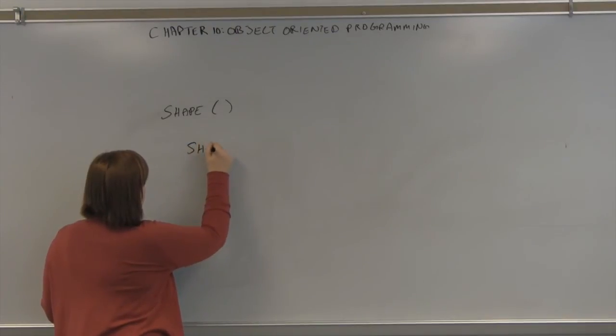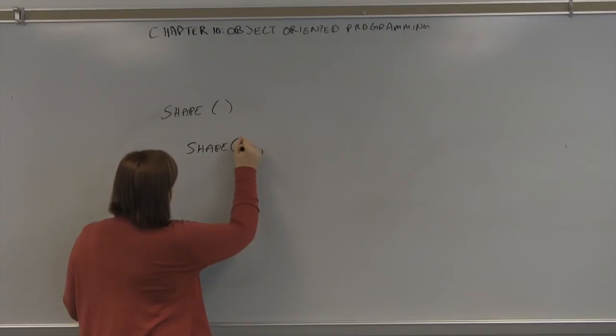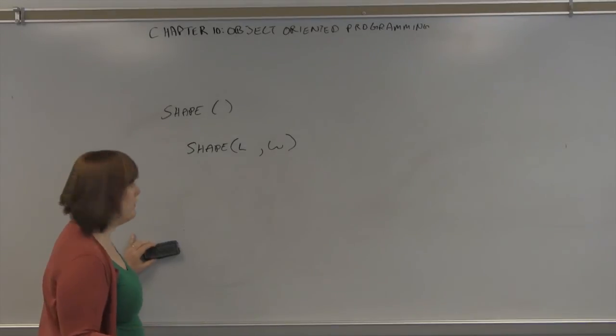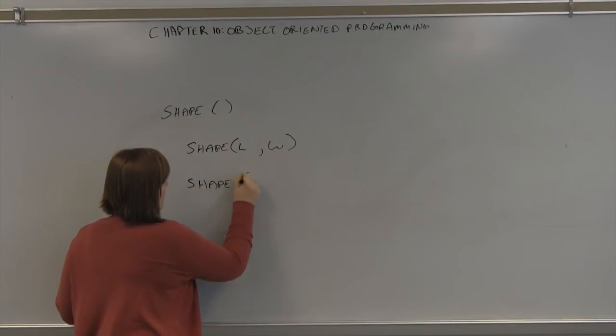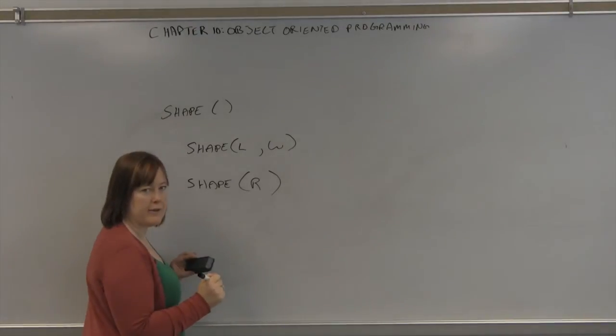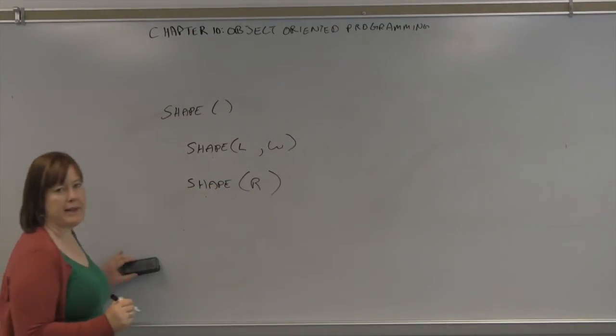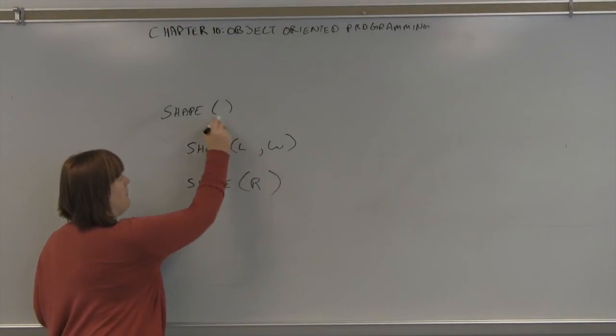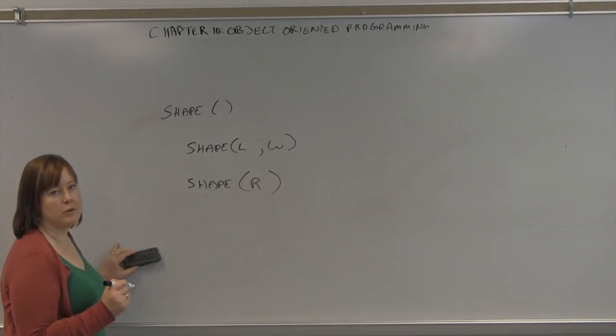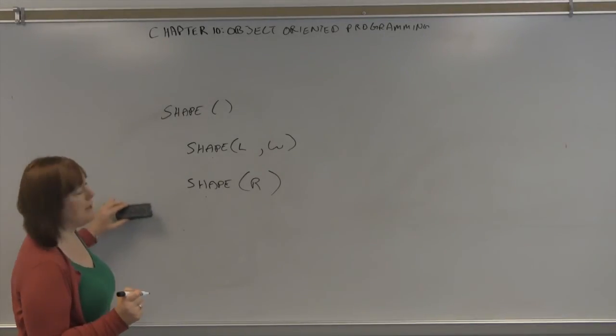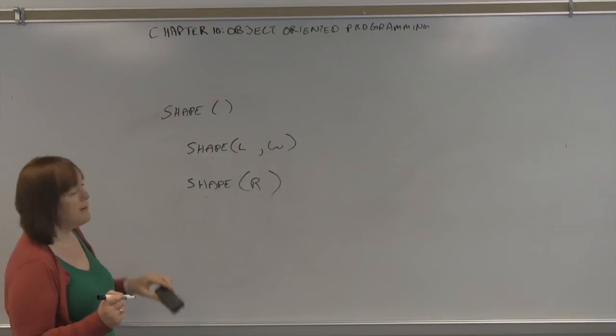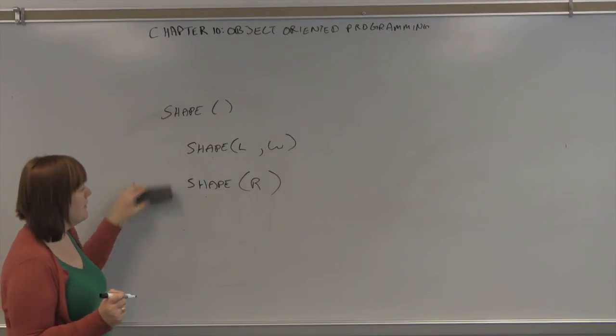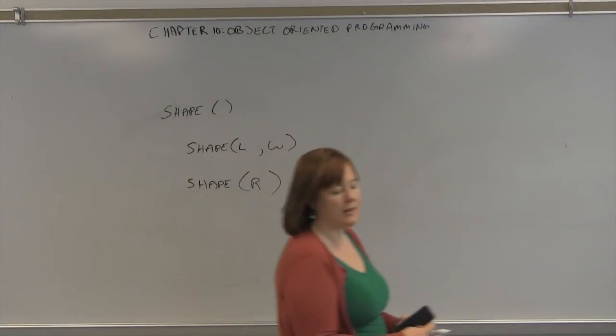But if we pass parameters into it, length and width, we could calculate the area of a rectangle. If we pass in radius, we could calculate the area of a circle. Notice that these have the same name. But they have different parameters being passed into them. This is called overloading a method. Because you can have the same name and accept different parameters. This is an example of polymorphism where you can have the same class or object doing different things. And that's something that you get into a lot in object-oriented programming.